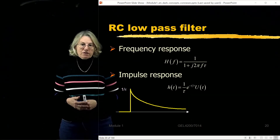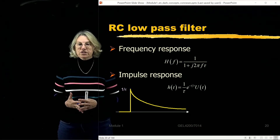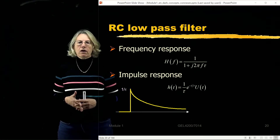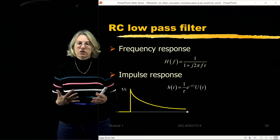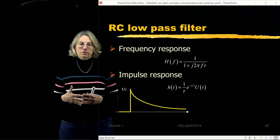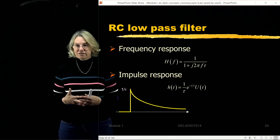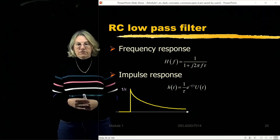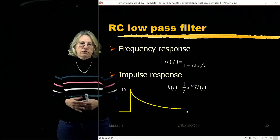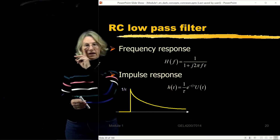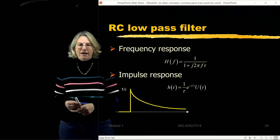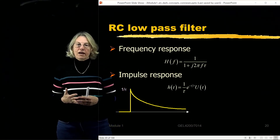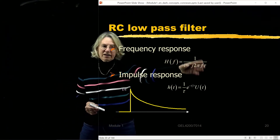I've talked about ideal versions of filters; now I'll talk about realistic versions, in particular the low-pass filter. One very inexpensive version is the RC low-pass filter. Its frequency response is 1 over (1 + j 2 pi f tau), where tau is the time constant determined by the resistance and capacitance in the circuit.